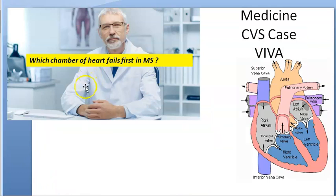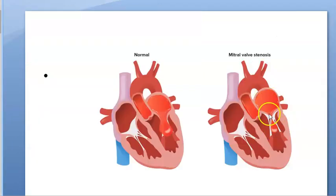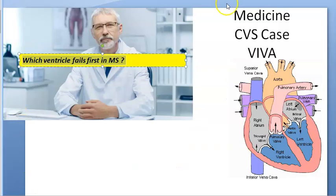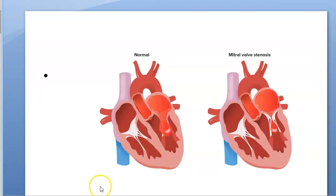Which chamber of the heart fails first in mitral stenosis? Mitral stenosis will cause the failure of the left atrium first, because blood will pool more in the left atrium because of the stenosis. Which ventricle fails first in MS? In mitral stenosis, the first ventricle to fail will be the right ventricle — the right one will fail first.